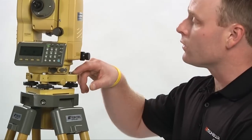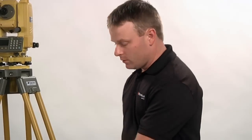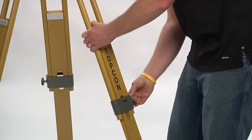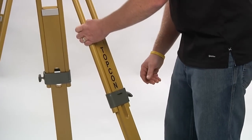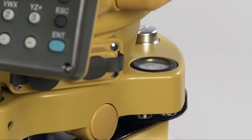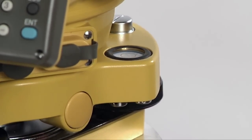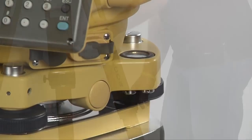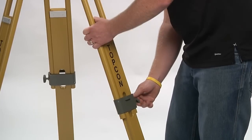Perhaps the most complicated part of setup over point is rough leveling. We do that by raising and lowering the legs to level the circular bubble. Grip the left side of the leg with your left hand and the clamp with your right to move the leg up and down while viewing the motion of the circular bubble. Move the leg up and down until you are satisfied with the position of the circular bubble and lock with the clamp.